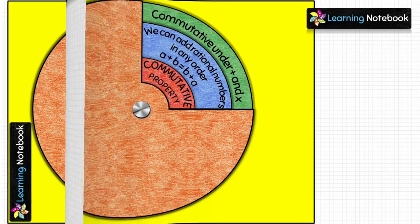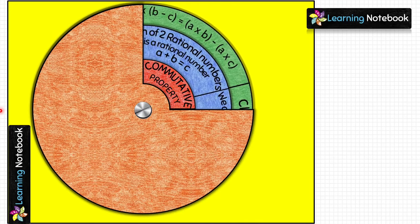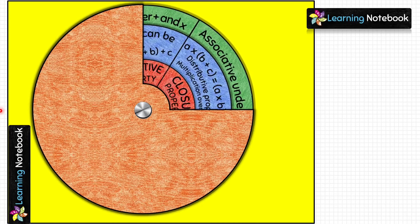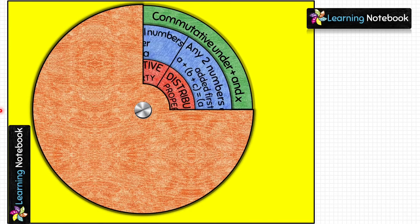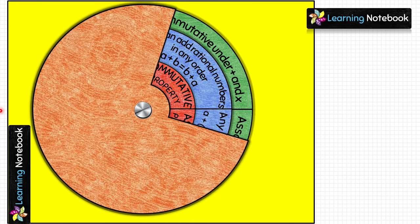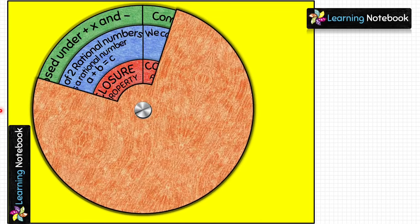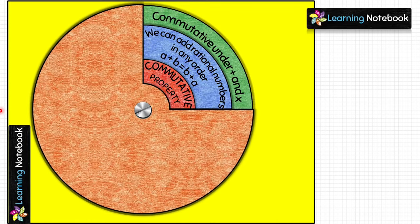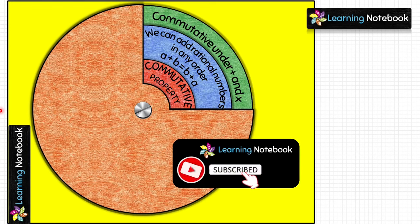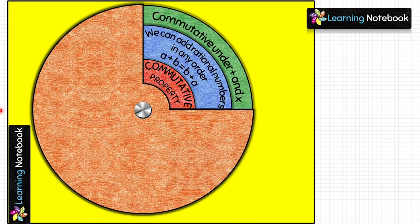This working model to learn properties of rational numbers is now ready. You can rotate the circles to reveal different content. If you are a teacher, this model will help you teach properties of rational numbers in a fun way. If you are a student, this activity is useful for a maths art-integrated project on rational numbers. Thanks for watching — share the channel and see you in the next video!